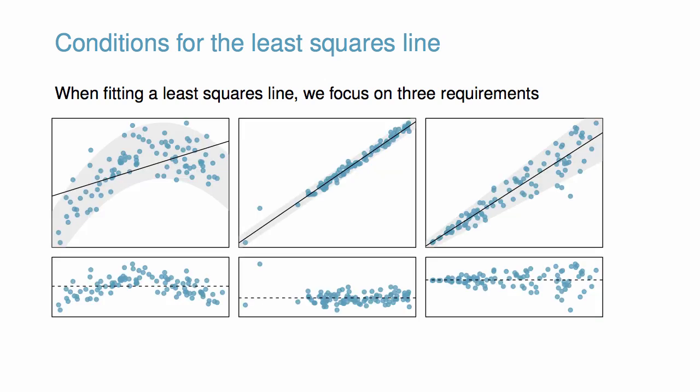The first panel shows an example of non-linearity. We see a distinctive curvature in this case. The second panel shows an example of non-normal residuals. Notice the outlier towards the left. And the third panel provides an example of non-constant variability. You can see the points fan out towards the right.